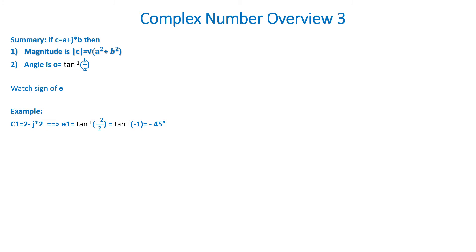Let's assume we have c1 equal to 2 minus j times 2. Then theta 1 is equal to inverse tan of negative 2 divided by 2, which reduces to the inverse tan of negative 1, which is negative 45 degrees.